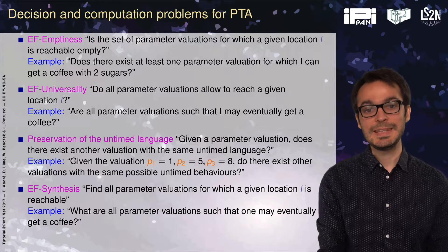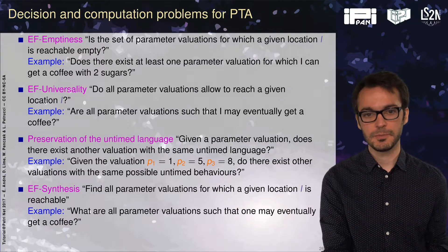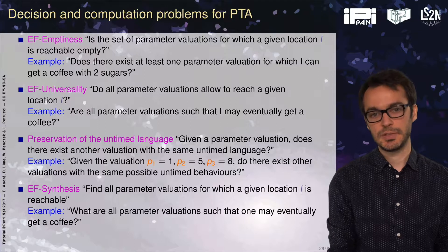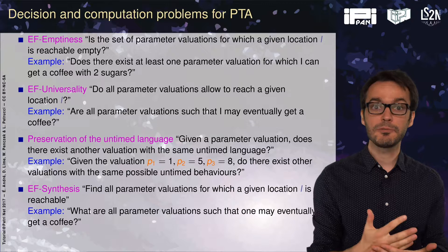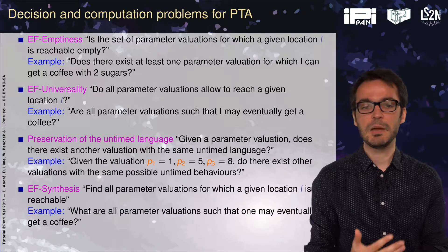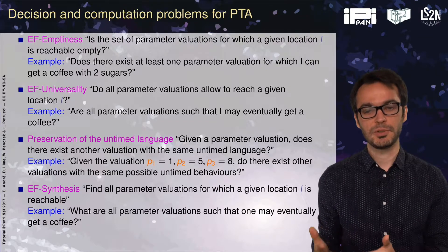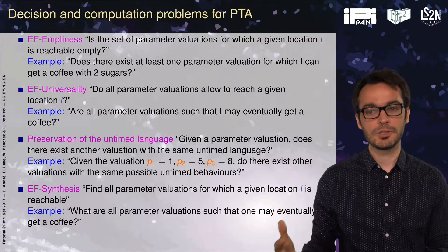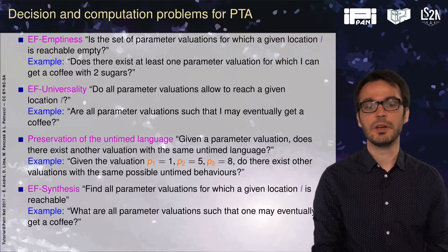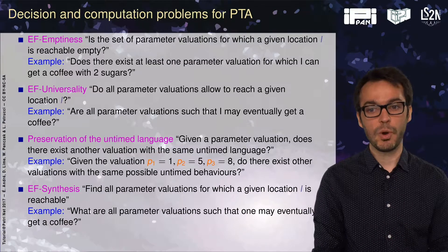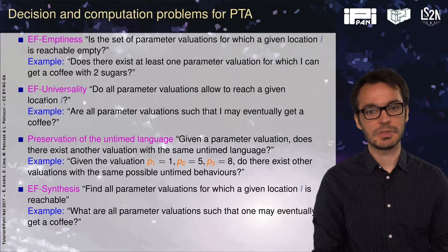What are the problems we will consider for parametric time automata? The first one is the EF emptiness problem. EF comes from CTL and means reachability. So it is a reachability emptiness problem. Be careful — the emptiness here is not the emptiness of the language; it is the emptiness of the set of valuations. So: is the set of parameter valuations for which a given location L is reachable empty or not? For instance: does there exist at least one parameter valuation for which I can get a coffee with two sugars?